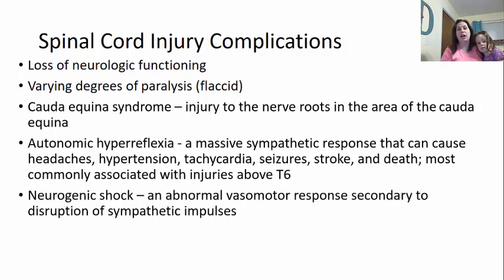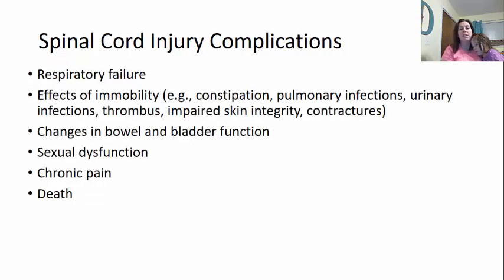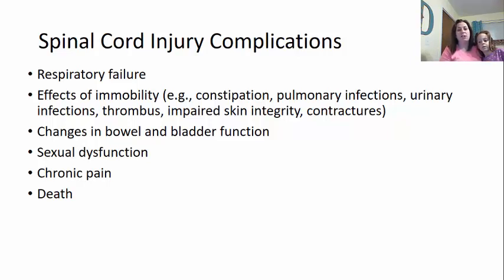Neurogenic shock is an abnormal vasomotor response secondary to a disruption in sympathetic impulses. Respiratory failure is another complication — the higher the injury, the more complication you have with the respiratory system. Immobility could affect both legs or arms and legs, contributing to constipation, pulmonary infections, urinary infections, thrombosis where blood clots may form and move, impaired skin integrity, and potential contractures. There can also be changes in bowel and bladder function, sexual dysfunction, chronic pain, and ultimately death especially if it's a high cervical injury near the brain stem.